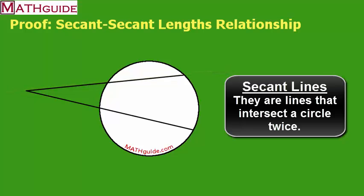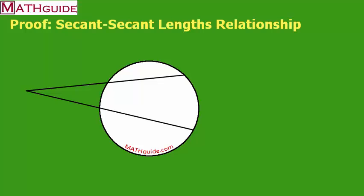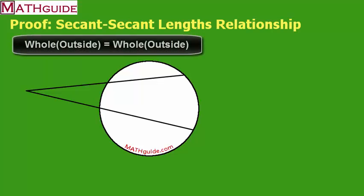All right, so I'm going to be talking about specific lengths. In my other video when I show students how to calculate lengths, there's an expression I use. I say the whole distance times the outside of one secant line is equal to the whole distance times the outside of the other secant line.